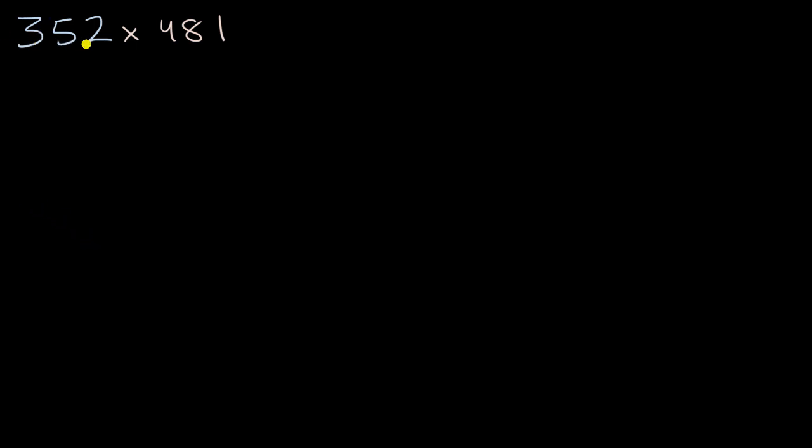So first let's just appreciate that 352 can be rewritten as 300 plus 50 plus 2, or we could think of it as 2 plus 50 plus 300. You add these three numbers together, you're going to have 352. And same idea, 481, that's four hundreds plus eight tens, which is 80, so plus 80, and then we have one one, so plus 1.